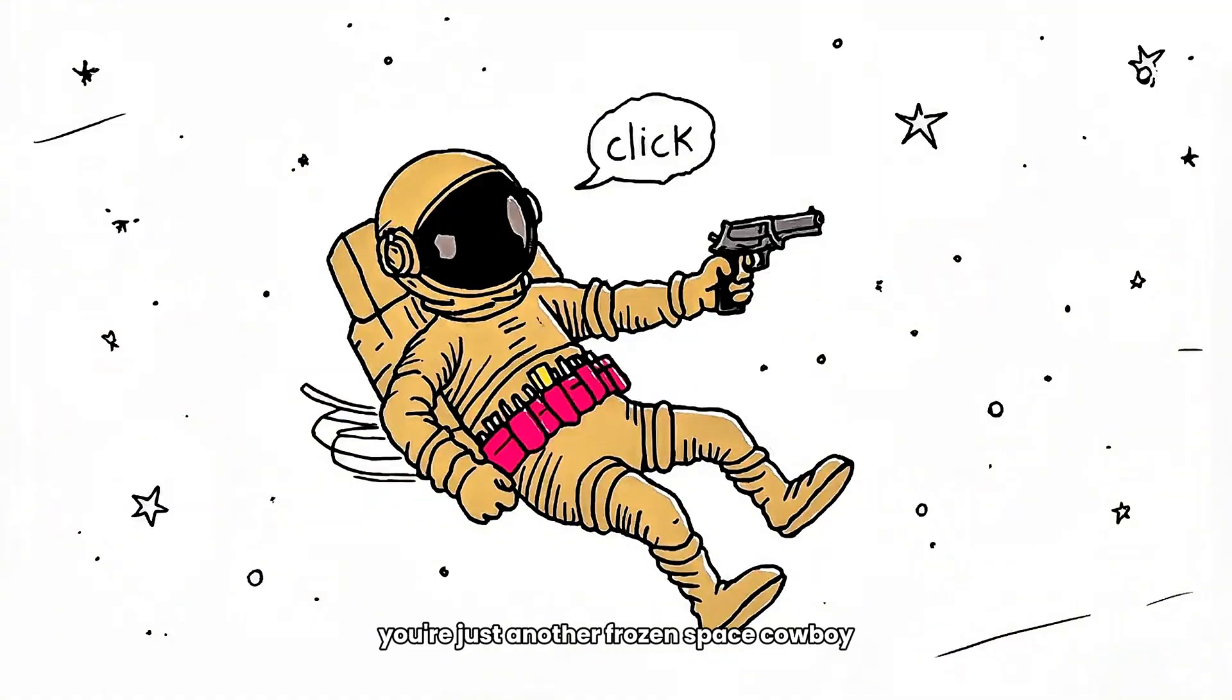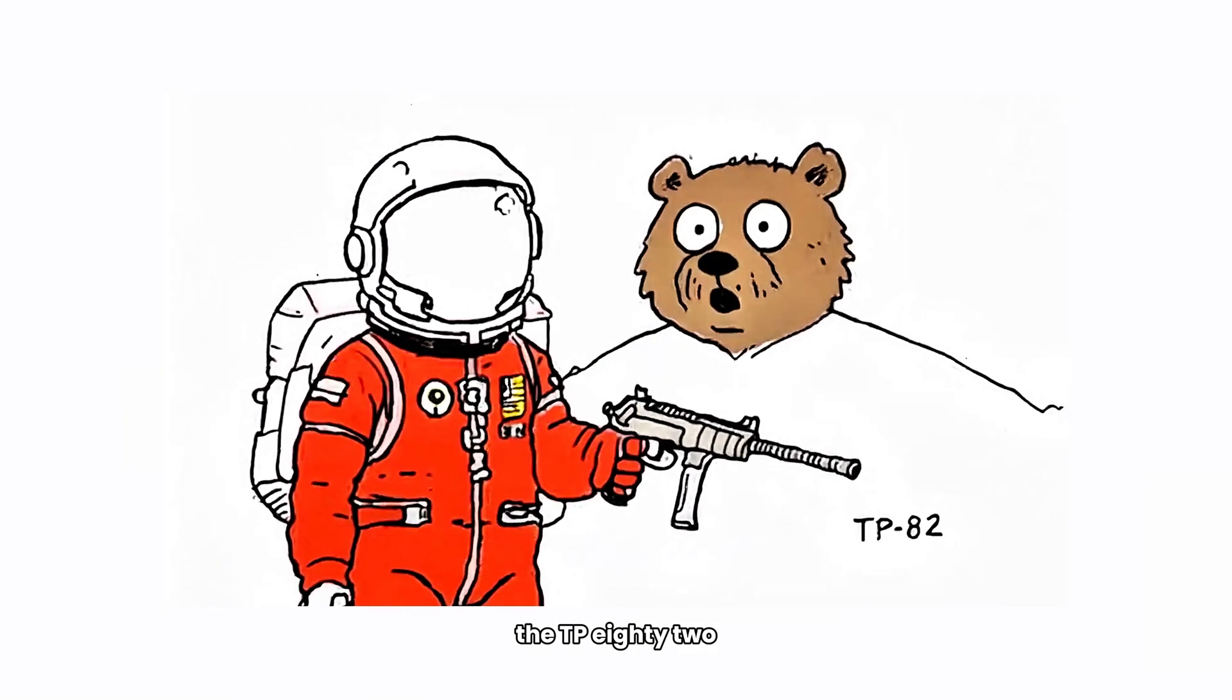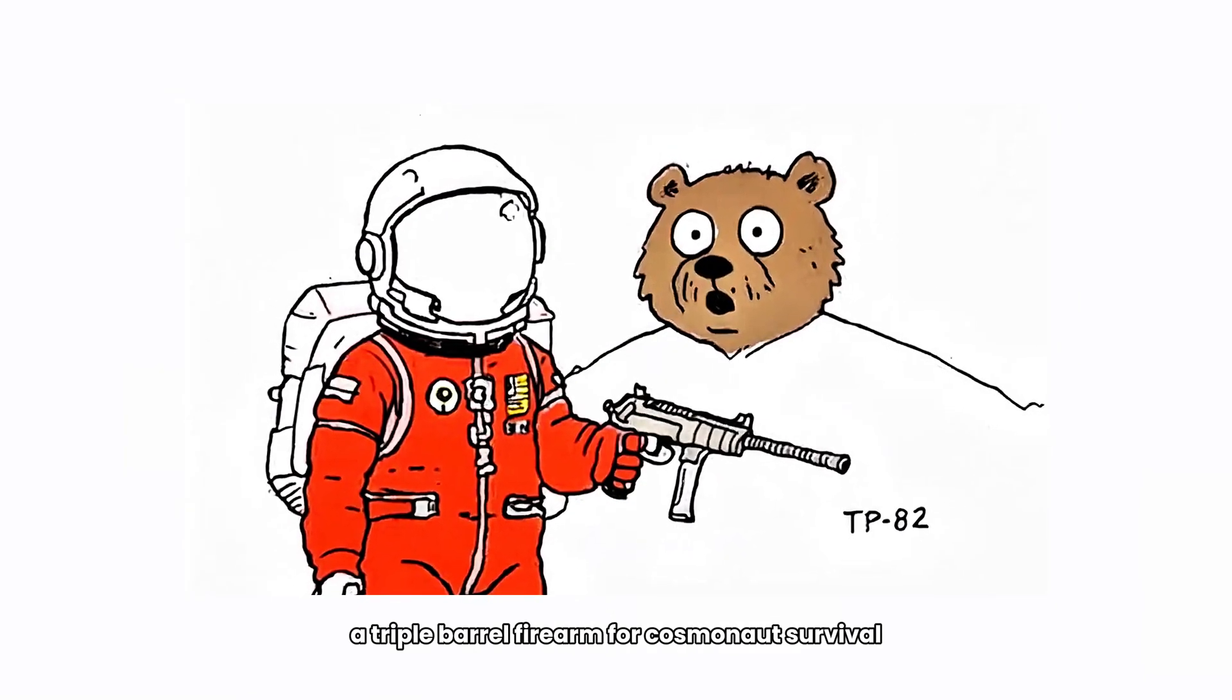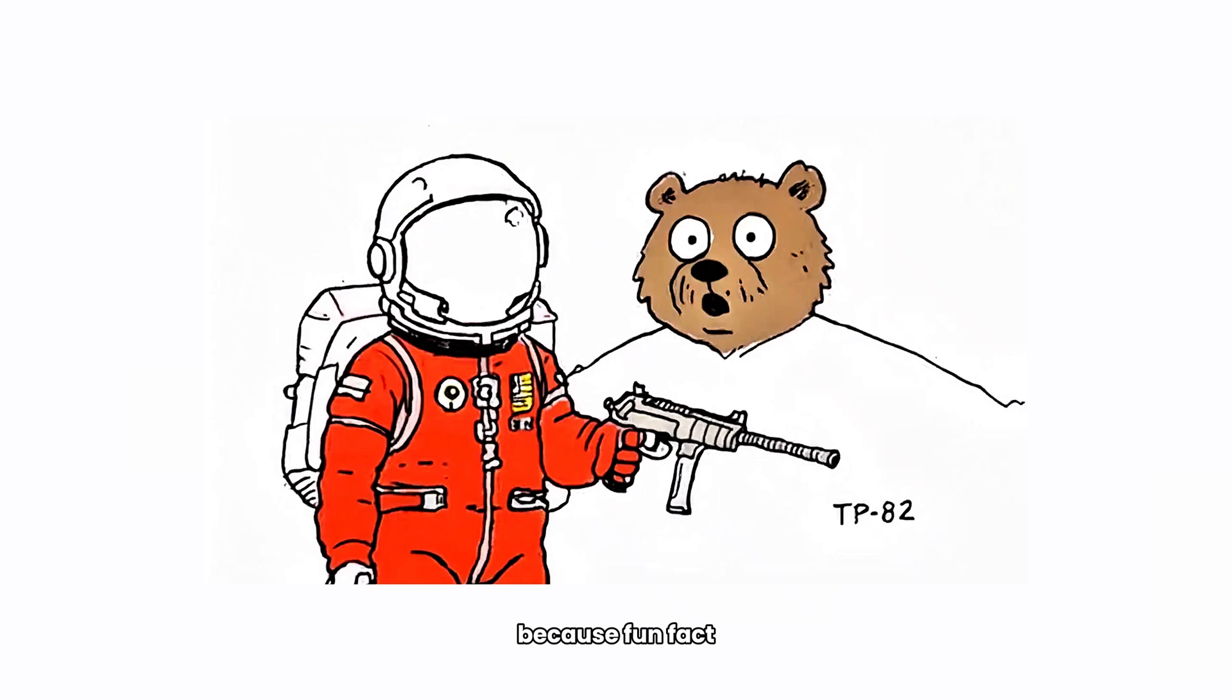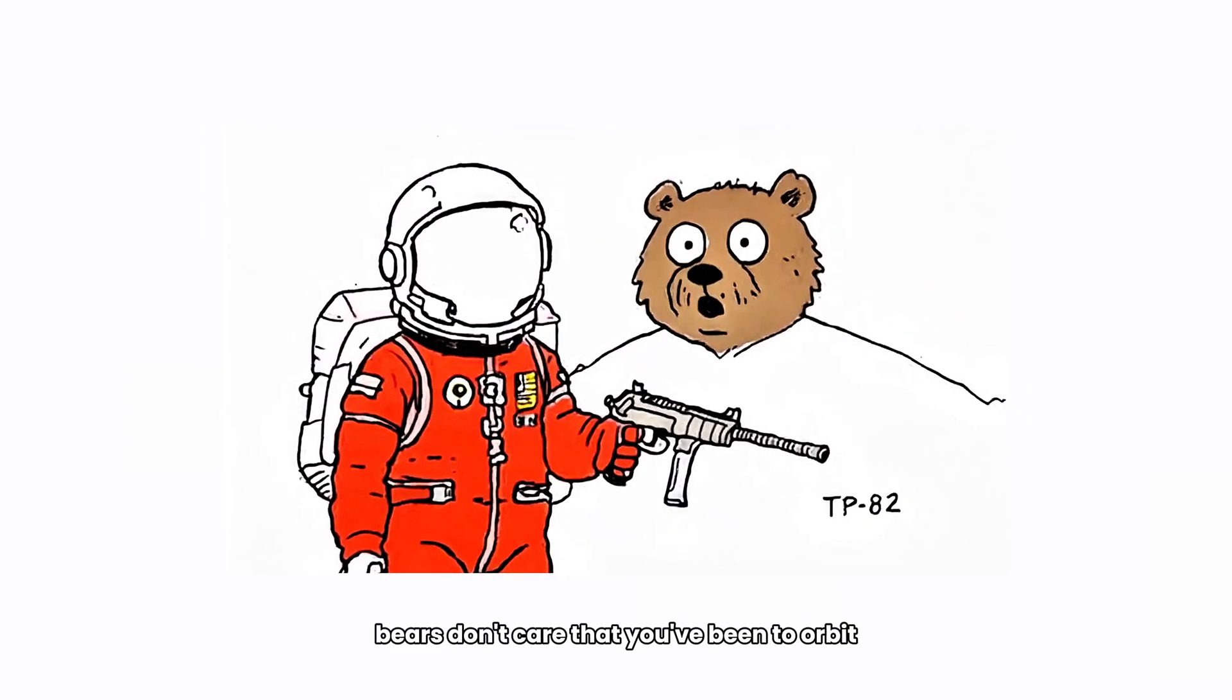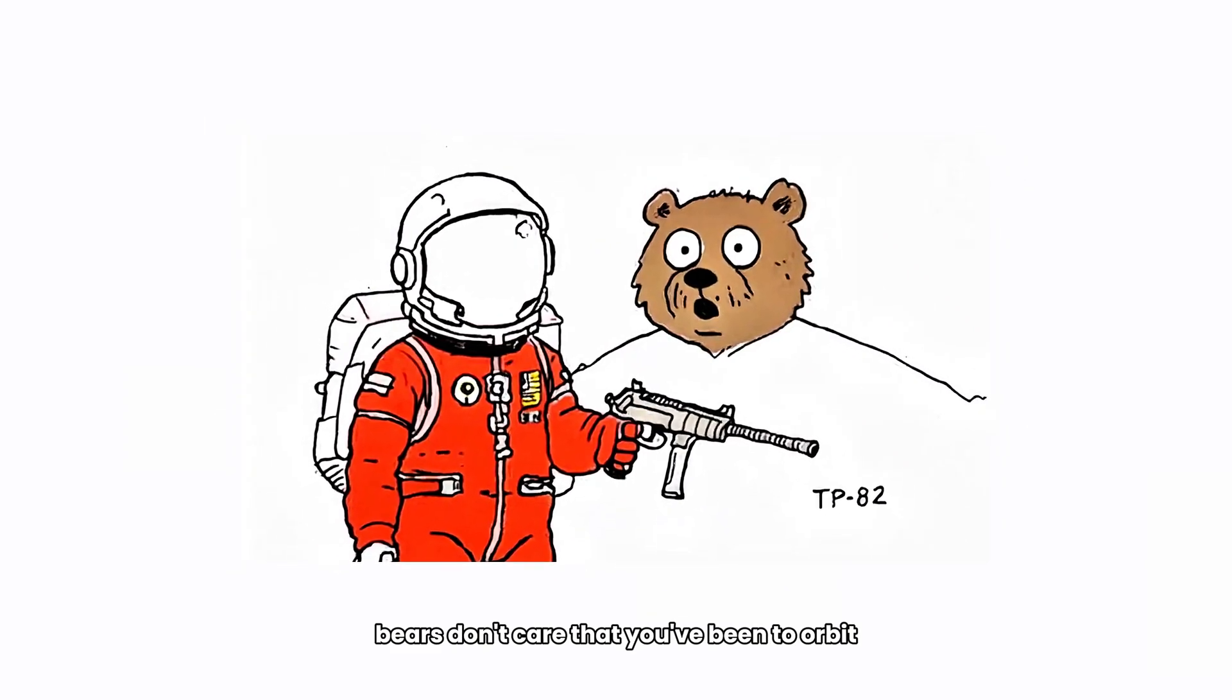Run out of bullets? You're just another frozen space cowboy. Guns in space aren't just sci-fi. The Soviet Union actually launched a space gun, the TP-82, a triple-barrel firearm for cosmonaut survival. Because, fun fact, bears don't care that you've been to orbit.